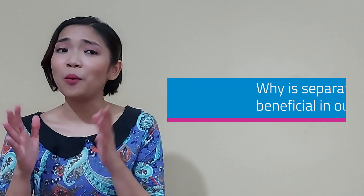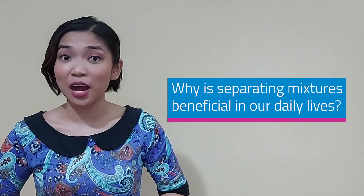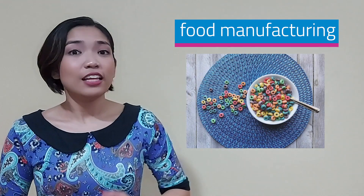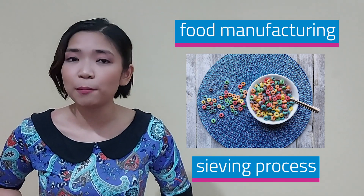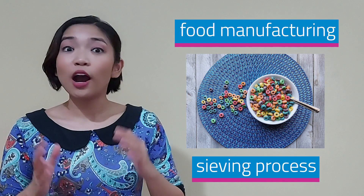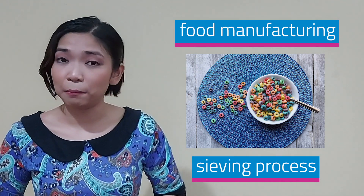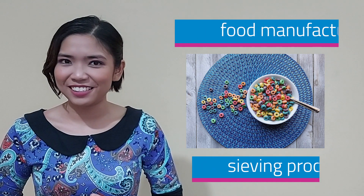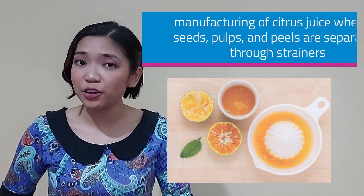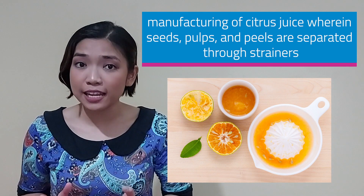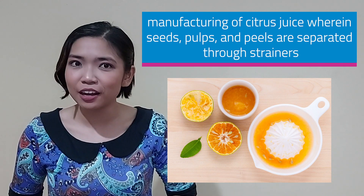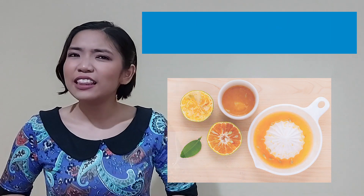So, why is separating mixtures beneficial in our daily lives? Here's why. First is for food manufacturing. The cereals we purchase undergo a sieving process to remove undersized or oversized cereal pieces to achieve size consistency. Sieving is also involved in the manufacturing of citrus juice, wherein seeds, pulps, and peels are separated through strainers. This is to ensure that there are no solids included in the juice when it is packed.